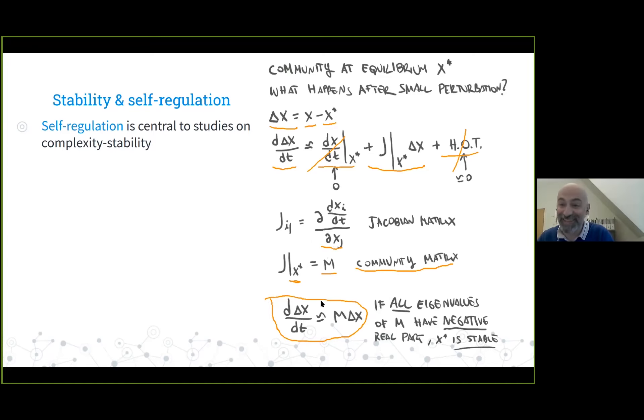This turns out to be the only system of differential equations we can really solve with full generality. We know that all that matters for these perturbations to subside and go back to zero is that all the eigenvalues of this matrix M have to have a negative real part. Eigenvalues in general can be real numbers or complex numbers with a real part and imaginary part. The real part has to be negative.